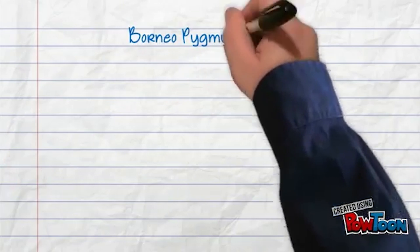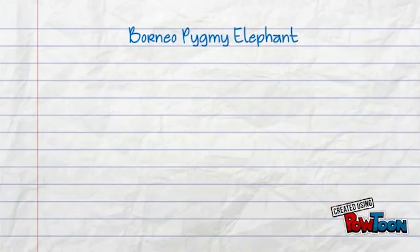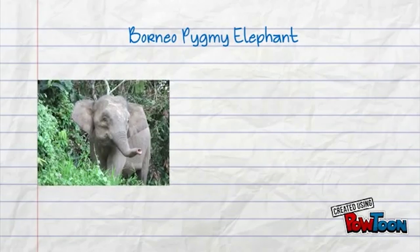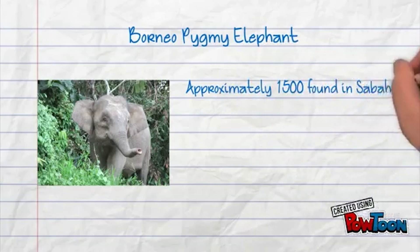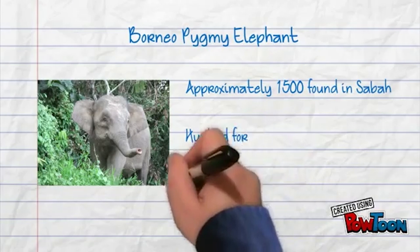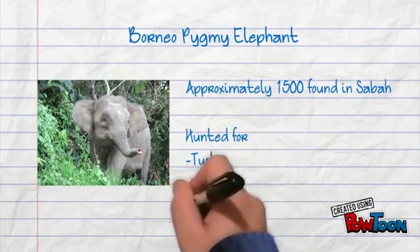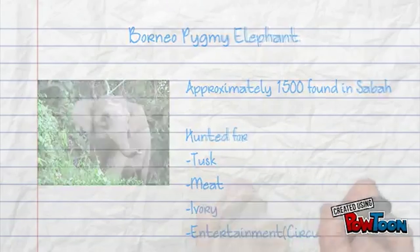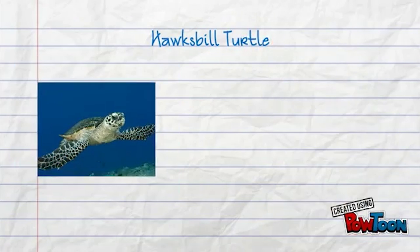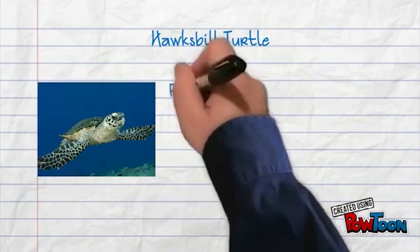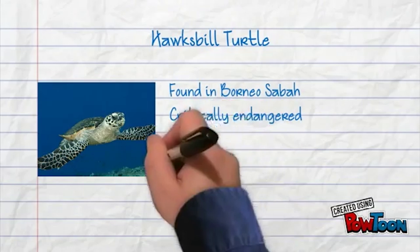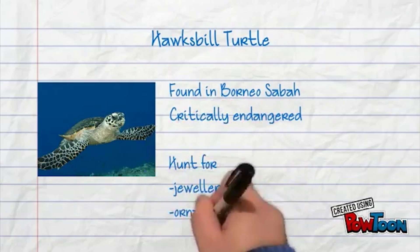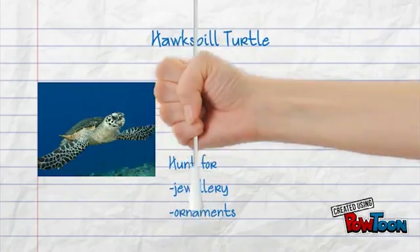Another endangered species in Sabah is the pygmy elephant. Their tusks are very famously made into souvenirs and jewels. Other than that, they are also hunted for entertainment value. Last but not least, the hawksbill turtle — their beautiful shells are hunted to make amazing jewelry and ornaments.